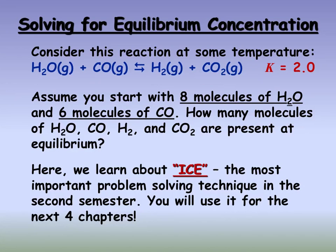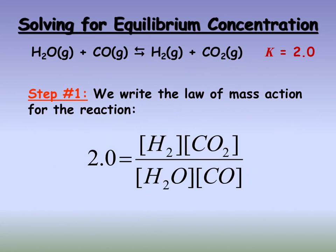Here's the process we need to take. First, we need to remember the law of mass action, because that's going to allow us to write the equilibrium expression. The first step in any of these problems is to write the equilibrium expression for the process. We plug in the value of k since it was provided in the problem: 2 equals the concentration of H₂ times the concentration of CO₂ over the concentration of H₂O times the concentration of CO.